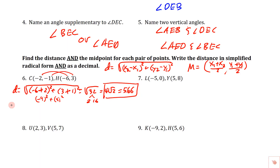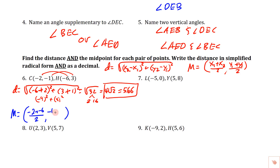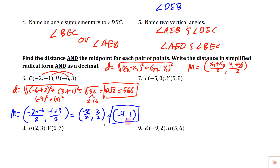The midpoint for the first pair: average the x-coordinates: (−2 + (−6))/2 = −8/2 = −4; average the y-coordinates: (−1 + 3)/2 = 2/2 = 1. So the midpoint is (−4, 1).